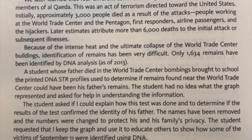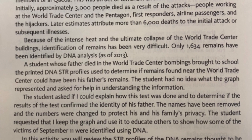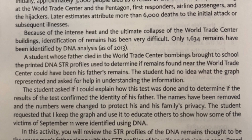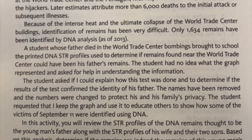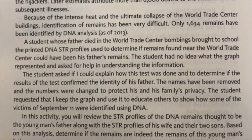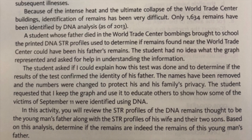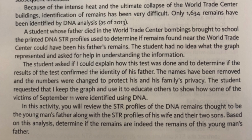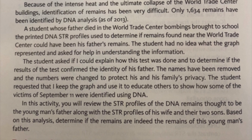Only 1,634 remains have been identified by DNA analysis as of 2013. A student whose father died in the World Trade Center bombings brought to school the printed DNA STR profiles used to determine if remains found near the World Trade Center could have been his father's remains. The student had no idea what the graph represented and asked for help, requesting that I explain how this test was done and determine if the results confirmed the identity of his father.